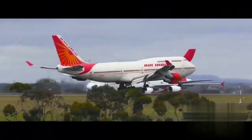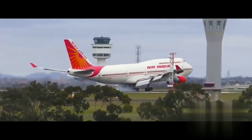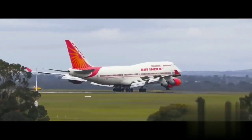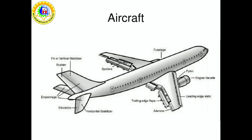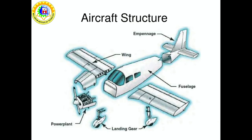Welcome to the topic: basic parts of the aircraft. In this topic we will be discussing the important parts in an aircraft. Here are the various components of a civil aircraft, namely fuselage, engine, aileron, stabilizer, empennage, rudder, etc. The aircraft consists of five principal units: the fuselage, wing, empennage, landing gear, and power plant.